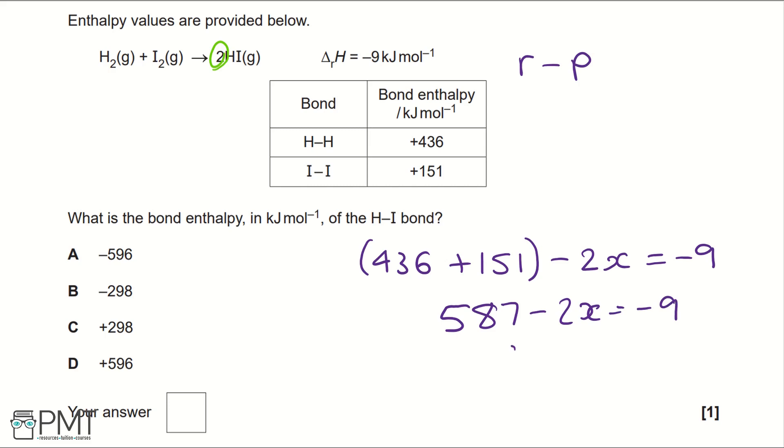Continuing to rearrange the equation, we get 596 equals 2x. What I have done here is I have added the 9 and I have added the 2x, so flipping the sides of the equation that they are on.